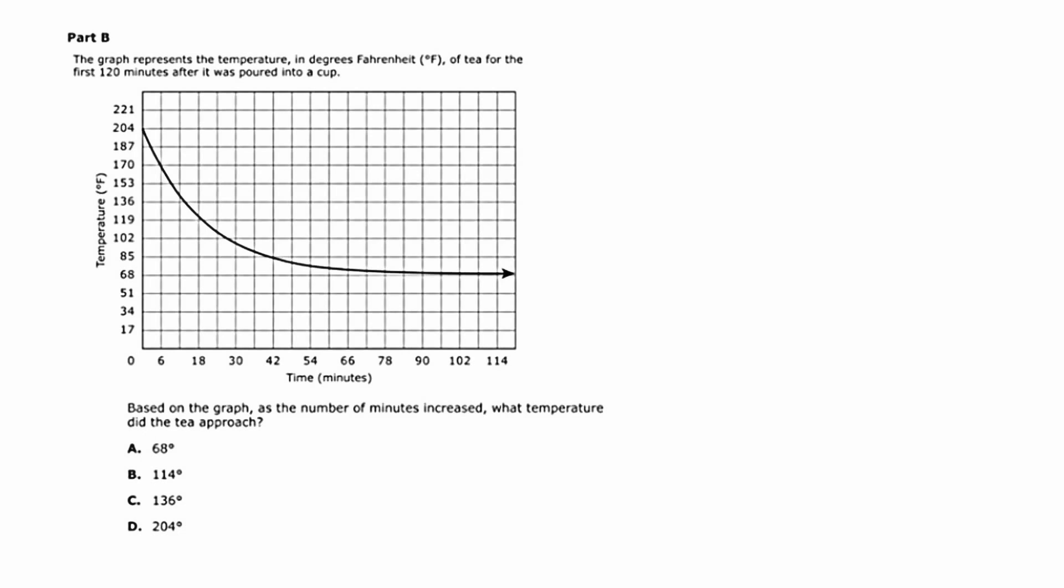So what I'm going to do is I'm going to look at the graph, but I'm going to look at it specifically towards the right. As time goes on and on, we see that the temperature of the tea drops, but then it sort of steadies. The question is, as the minutes increase, as I move my little cursor here to the right, what is it leveling off at?